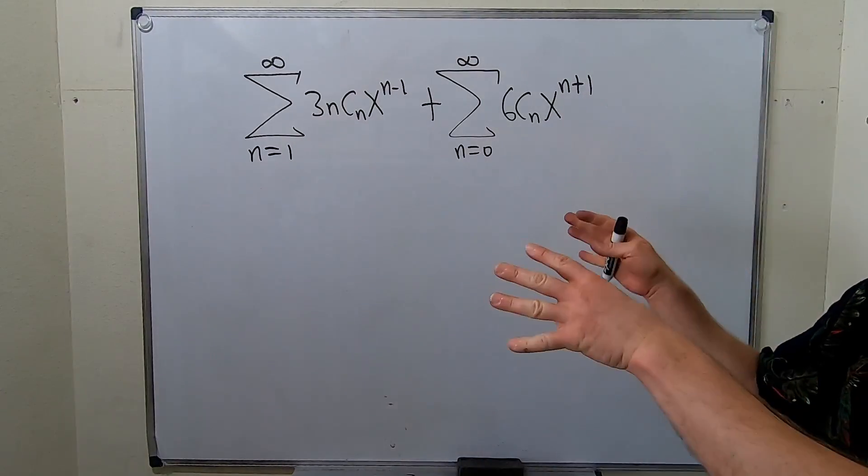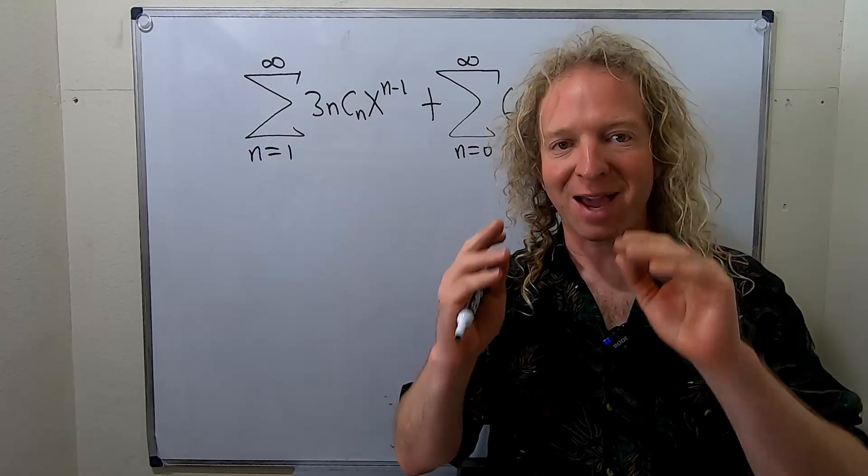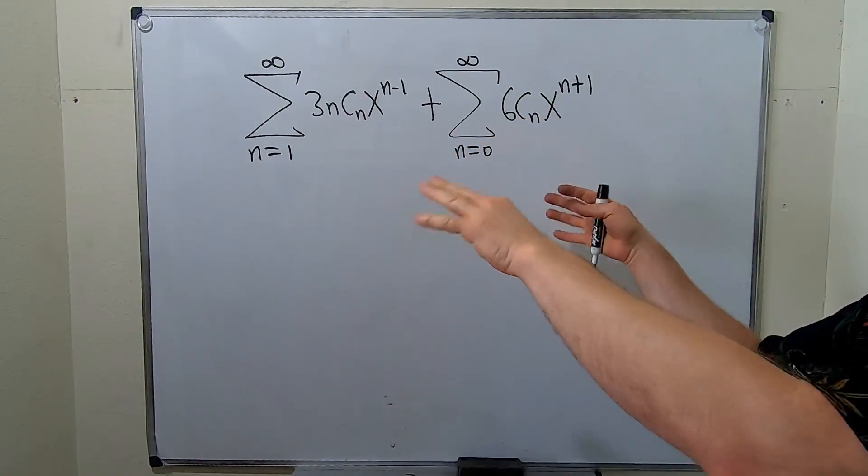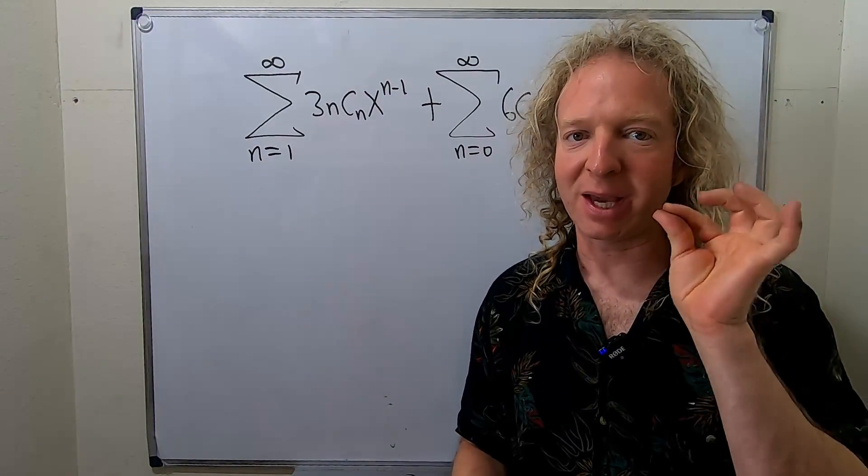In this video we're going to take these summations and write them as a single sum with a power of x to the k. The goal is to write this with a single sum. We might have some extra terms but we need to have only one sum and our power has to be x to the k.